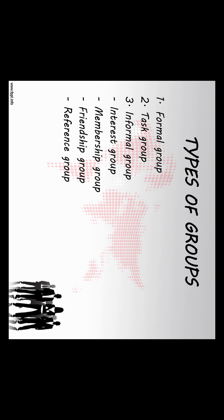2. Task Group: Task groups are formed by an organization to accomplish a narrow range of purposes within a specified time. These groups are temporary in nature and develop a solution to a problem or complete their purpose. Informal committees, task forces and work teams are included in task groups. The organization assigns a narrow set of purposes such as developing a new product or evaluating a proposed grievance procedure.